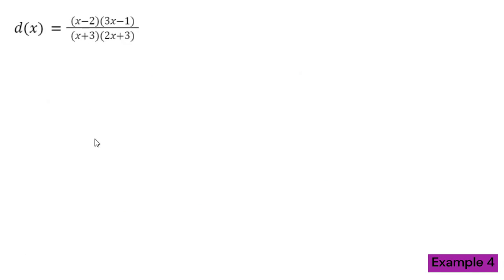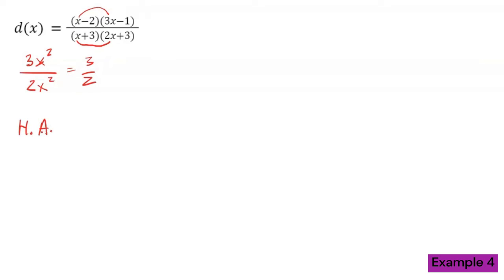Once again, I approach this example asking: do I even have a slant asymptote? I first find my leading terms so I can divide them. The leading term in the numerator is three x squared and in the denominator is two x squared. When I divide them, I just get three halves. That is not a polynomial — it's a constant — which automatically means I do not have a slant asymptote. I have a horizontal asymptote at y equals three halves. So there's no point in performing long division when the leading terms give you a constant.